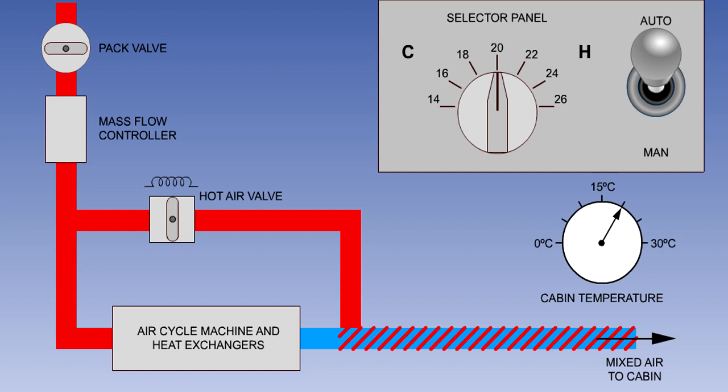The temperature of a sensor in the cabin is compared electronically with the selected value, and any difference modulates the hot air valve to allow more or less hot air to bypass the cooling components to increase or decrease the cabin temperature. If, for instance, the pilot selects an increase in temperature, the hot air valve will open to warm up the cabin. Once the selected temperature is reached, the valve will modulate as required to maintain it.